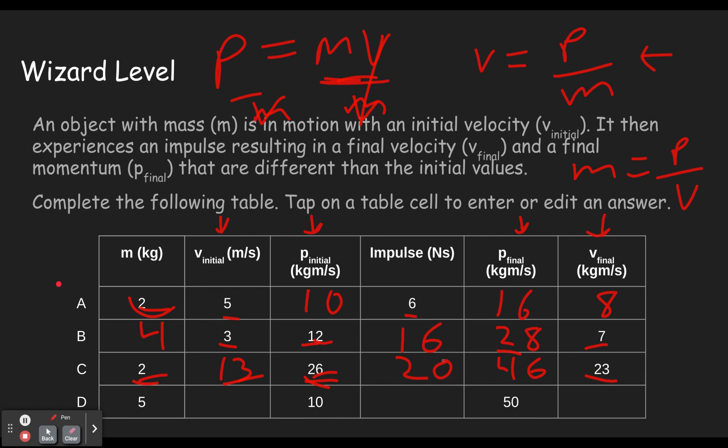And for our final one here, momentum of 10, mass of 2. We must have had an initial velocity of 2. I think I said 2. I meant to say 5. 5 times 2 gives you 10. To change from 10 to 50, we need 40 impulse. 50 momentum. 5 mass gives us 10 velocity. 50. Once again, using this equation.